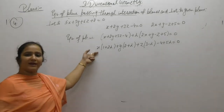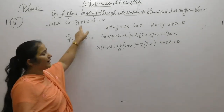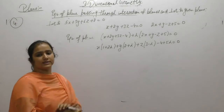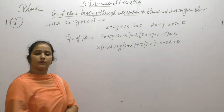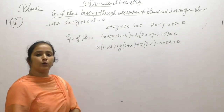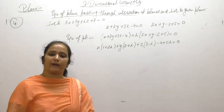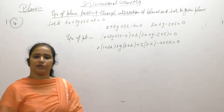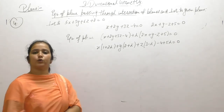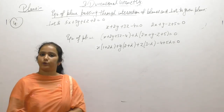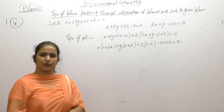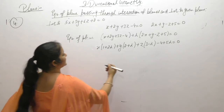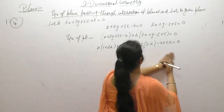This equation of the plane is perpendicular to the given plane. When two planes are perpendicular, the condition is a1·a2 plus b1·b2 plus c1·c2 equals 0. We will apply this condition.